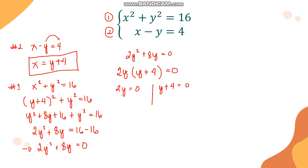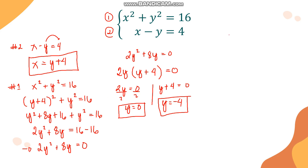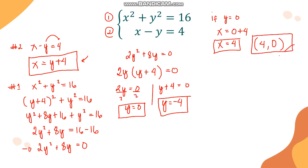Now we use these y-values to find x. Using x equals y plus 4: if y equals 0, then x equals 0 plus 4, so x equals 4. Written as an ordered pair, our first solution is (4, 0). If y equals negative 4, then x equals negative 4 plus 4, so x equals 0. Our second solution is (0, negative 4).